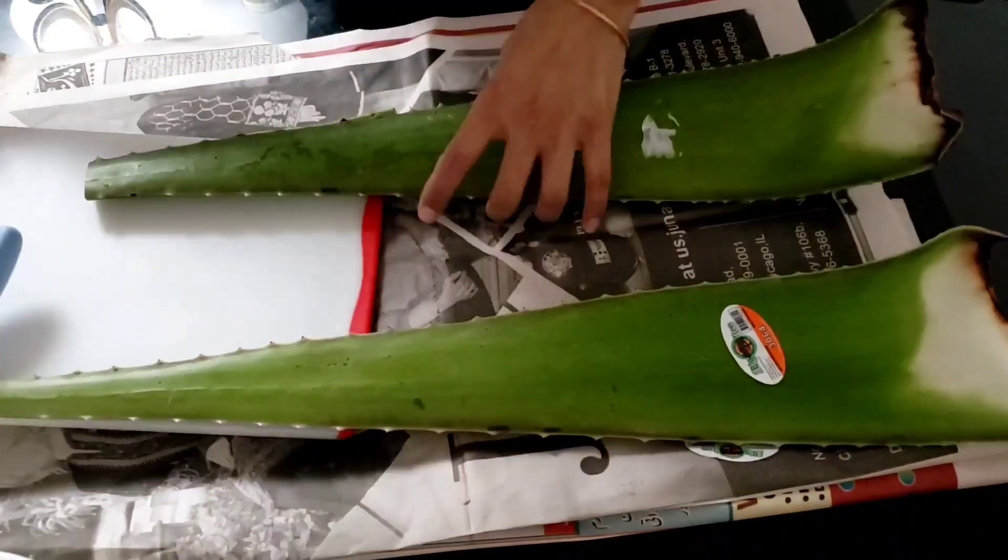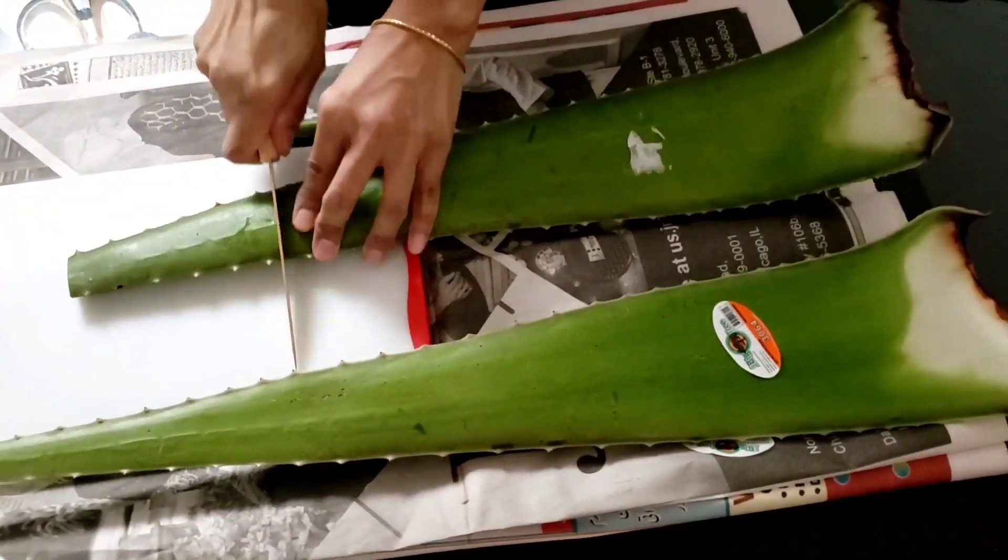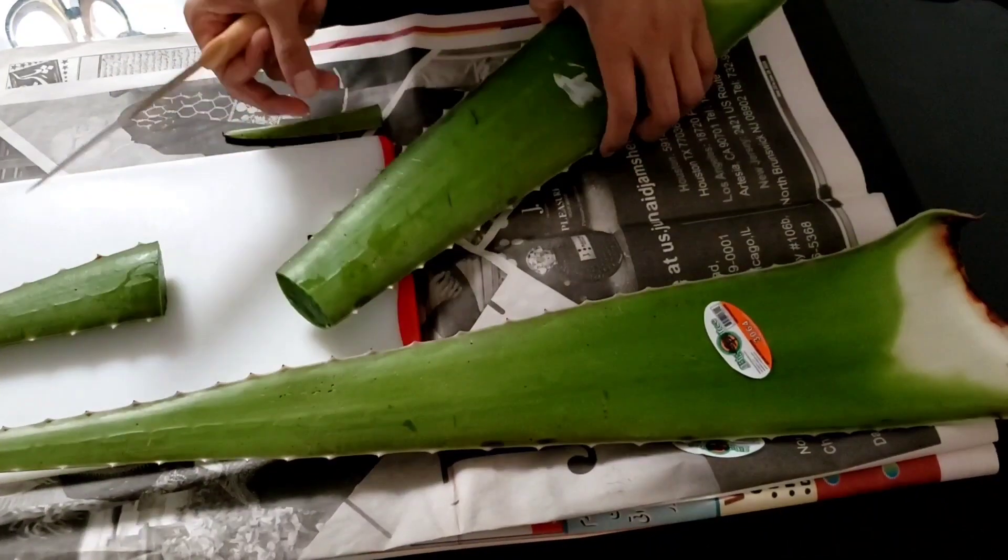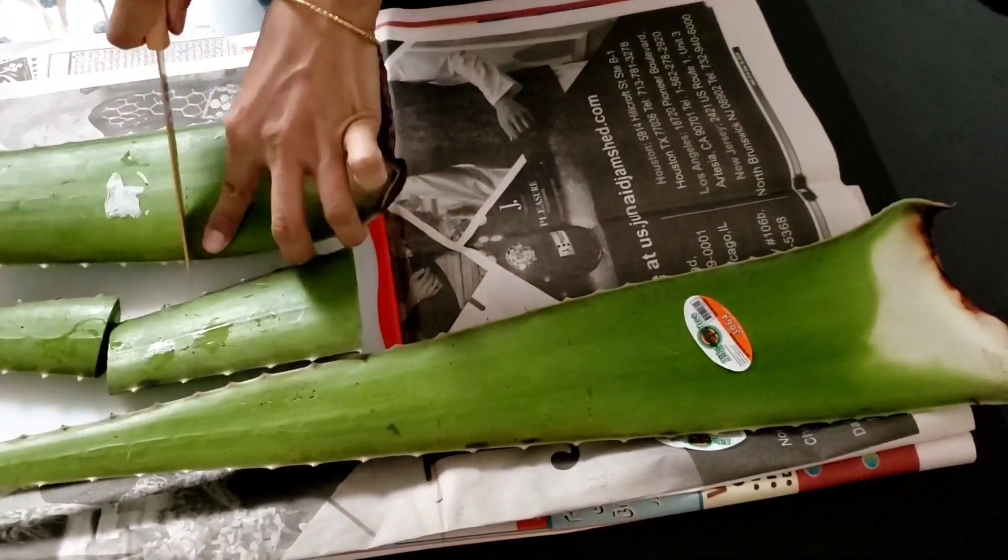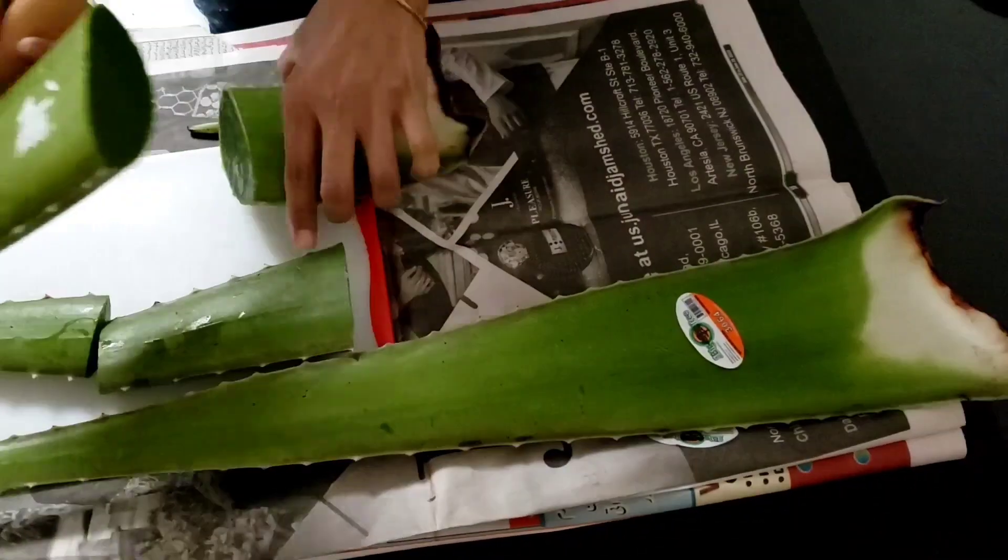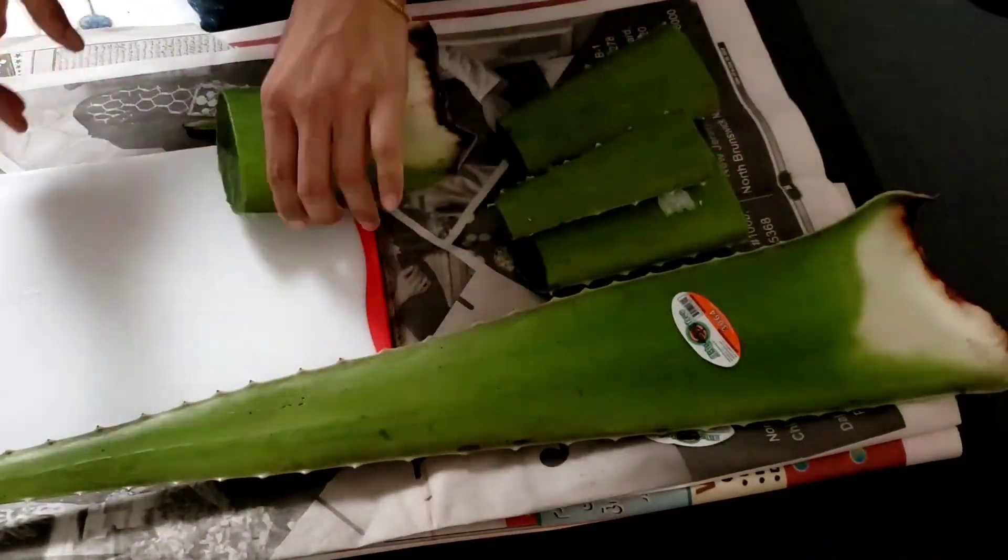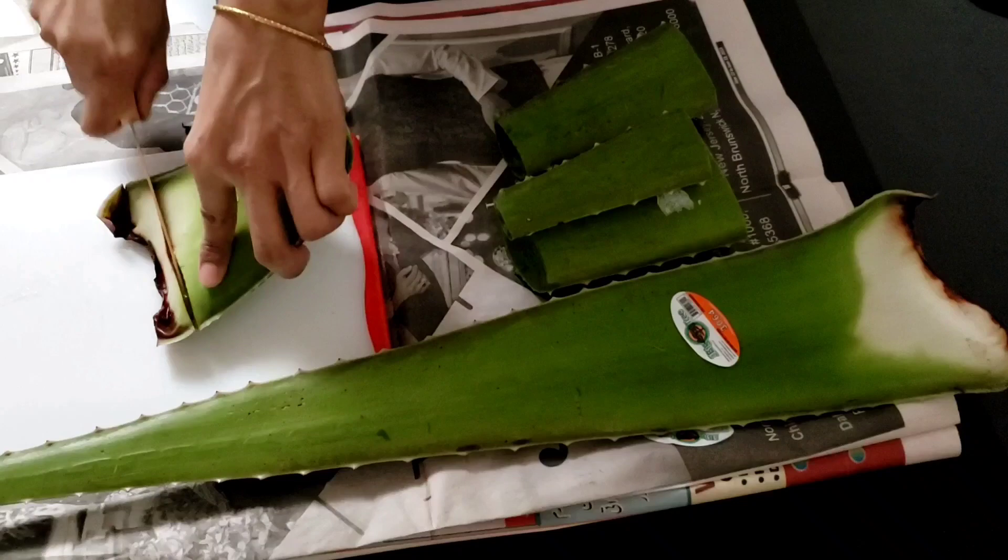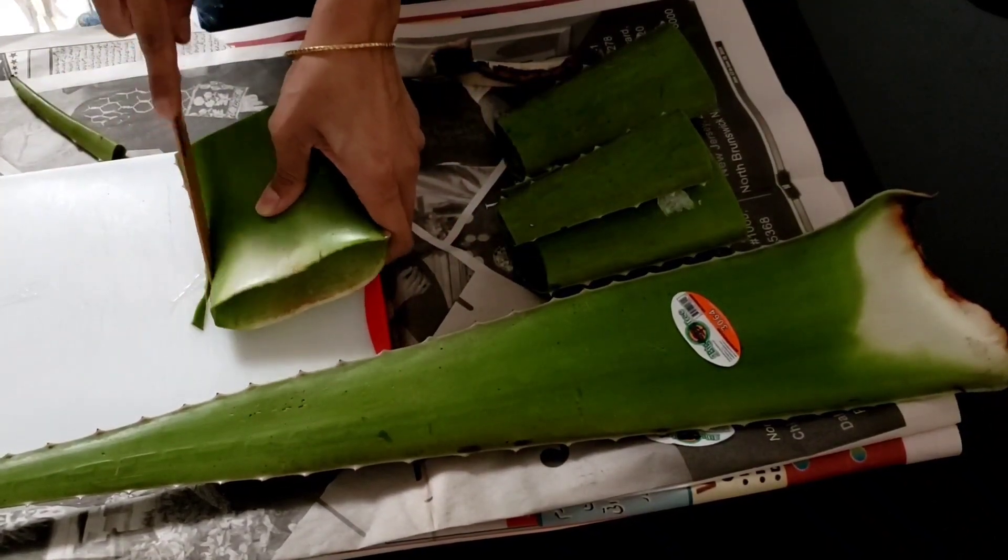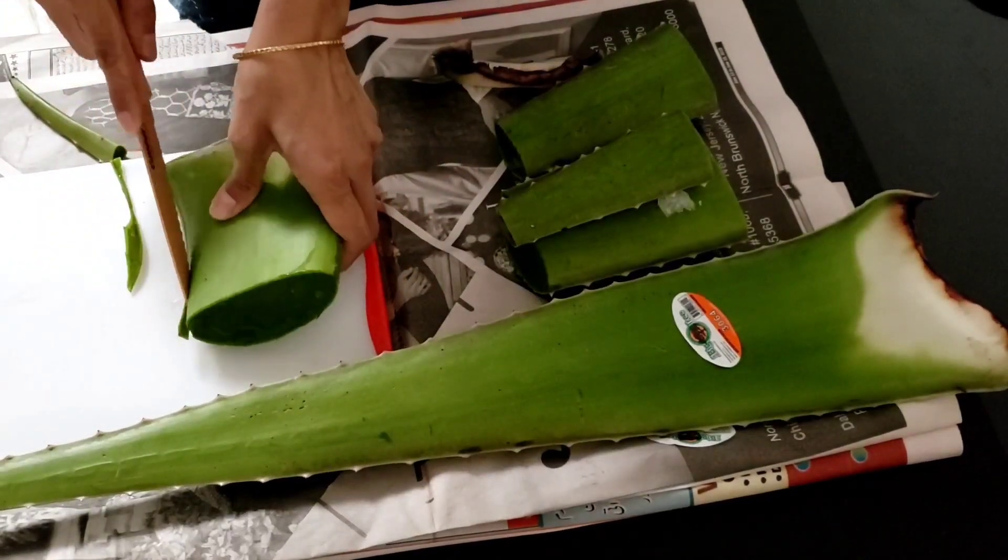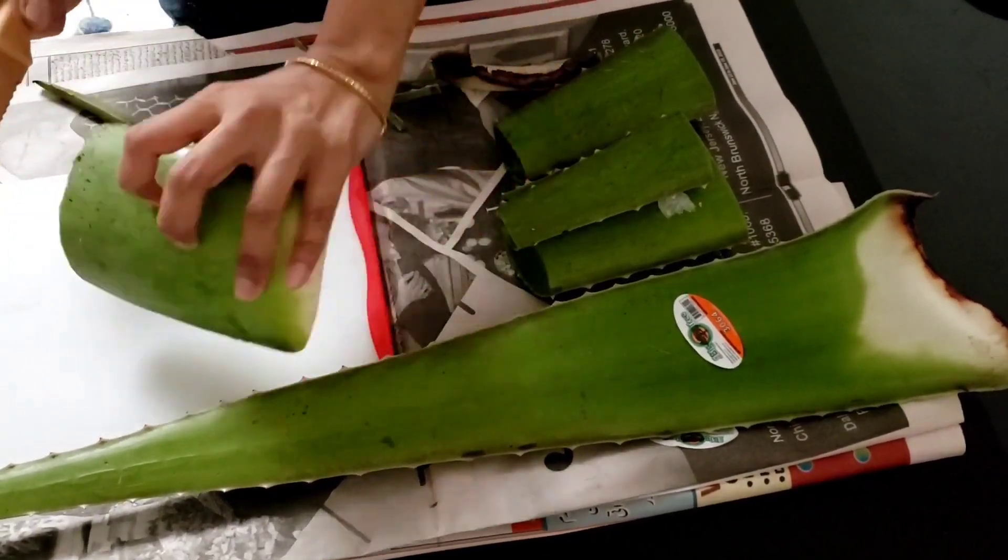Hi, hello everyone. Today I am making hand sanitizer at home from scratch using aloe vera plant leaves. I have two leaves which I started cutting, and then I'll take the gel out because I don't have ready-made aloe vera gel left in the house. So let's get started.